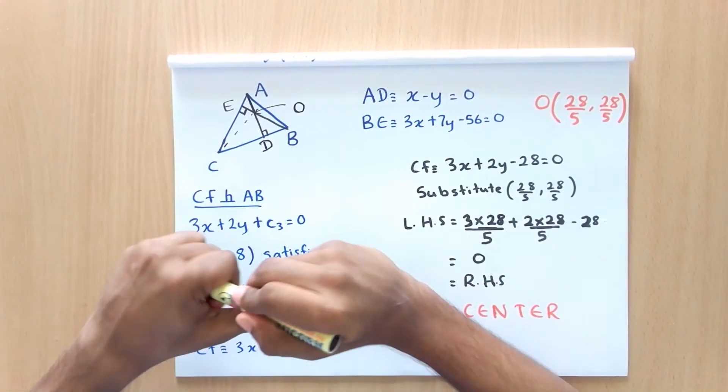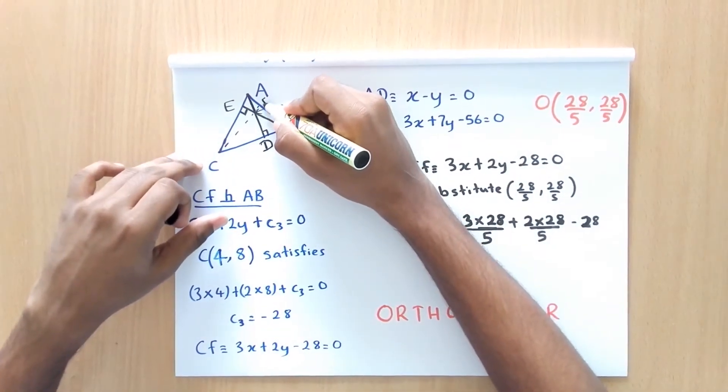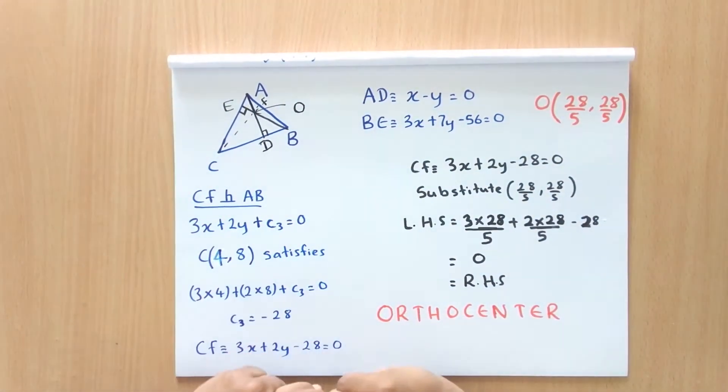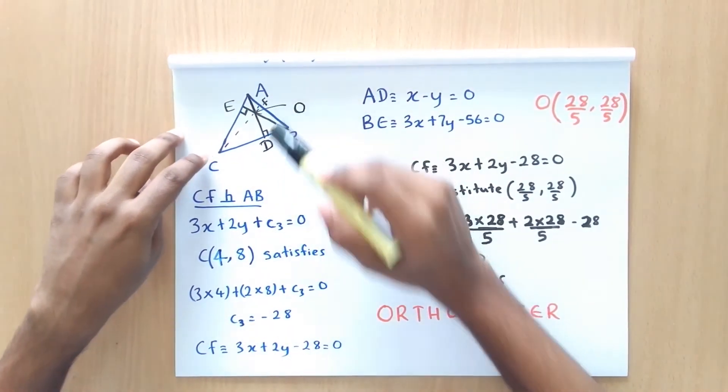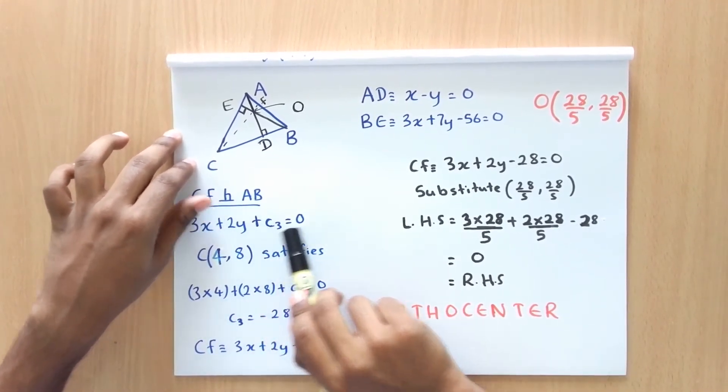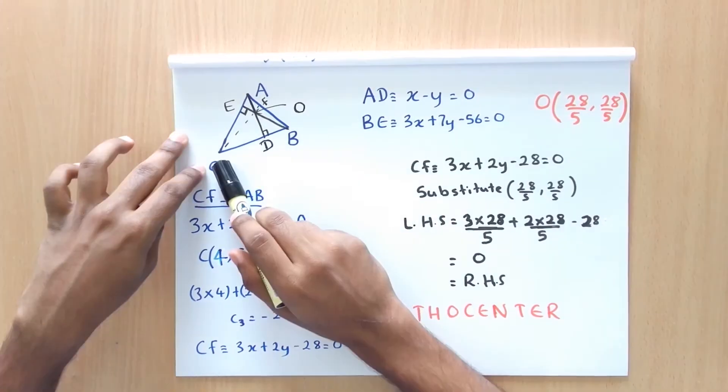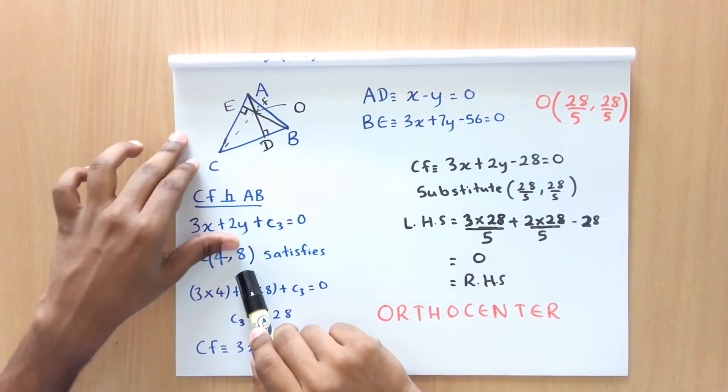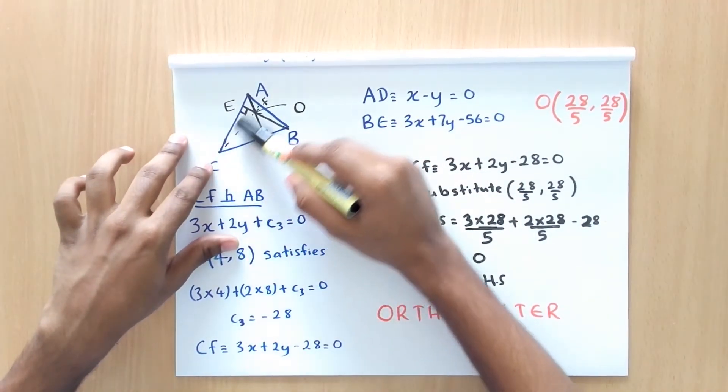So the third altitude CF is perpendicular to AB. So it can be written as 3x plus 2y plus C3 equals 0.